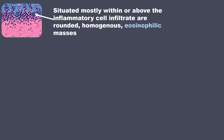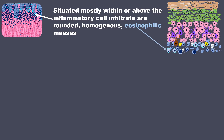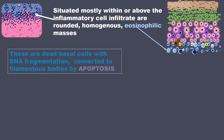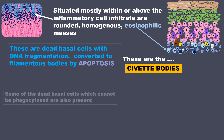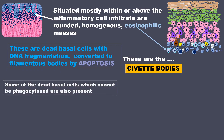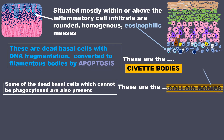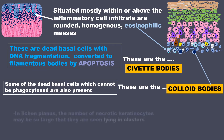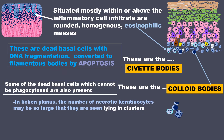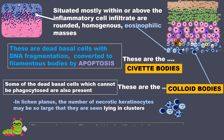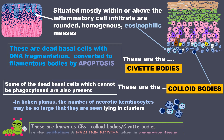Situated mostly within or above the inflammatory cell infiltrate are rounded homogenous eosinophilic masses. These are dead basal cells with DNA fragmentation converted to filamentous bodies by apoptosis, and these are called Civatte bodies. Some of the dead basal cells which cannot be phagocytosed are also present — these are the colloid bodies. In lichen planus, the number of necrotic keratinocytes may be so large that they are seen lying in clusters. Civatte bodies and colloid bodies seen in the connective tissue are termed hyaline bodies.